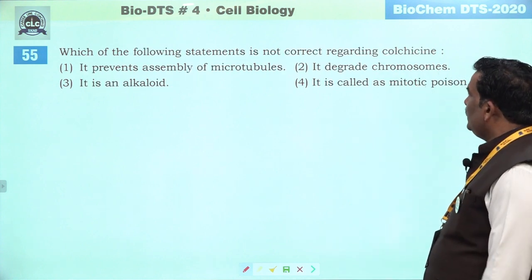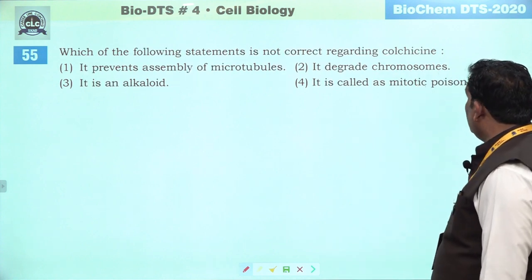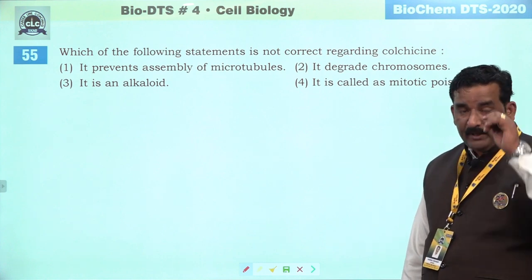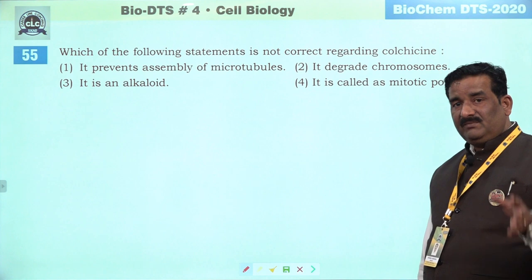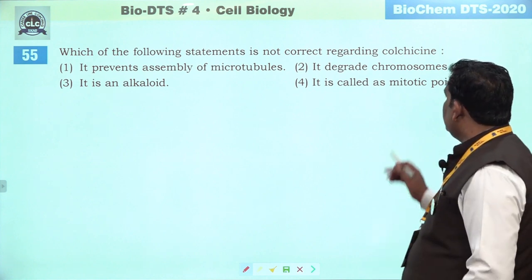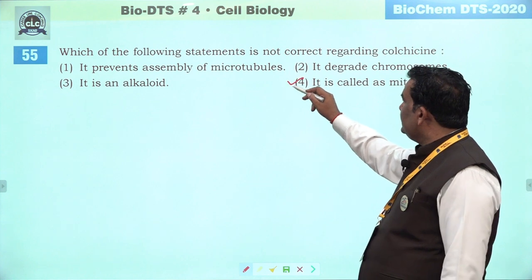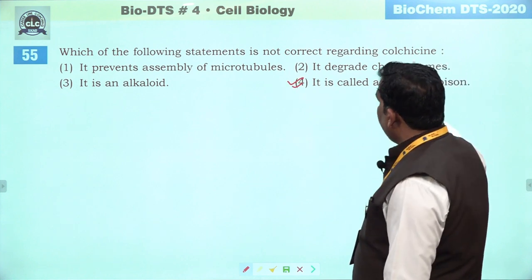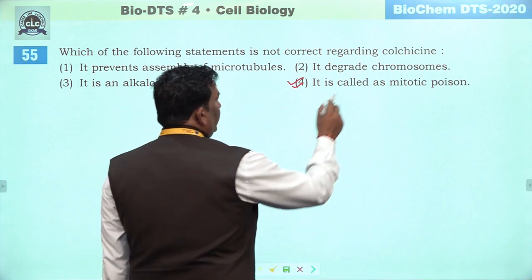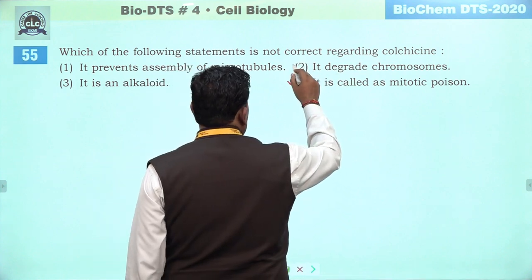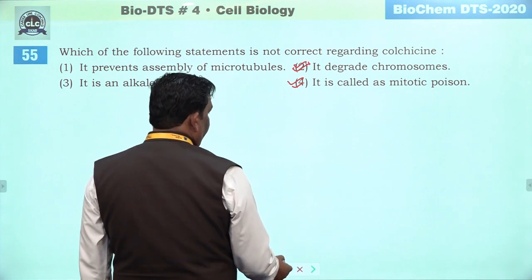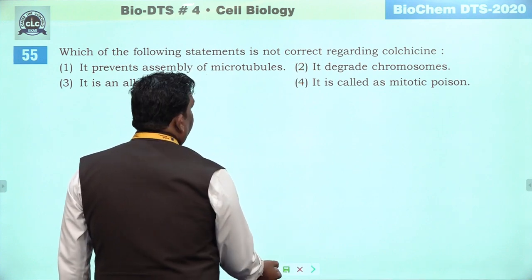Next question: which of the following statement is not correct regarding colchicine. Colchicum autumnale ek plant hai Liliaceae ka, jo colchicine ko produce karta hai. Yeh metaphase mein spindle fiber formation ko rok deta hai, isliye hum ise mitotic poison kehte hain. Humein not correct puchna hai — yeh degrade kabhi bhi chromosome ko nahi kar paayega — isliye second ek behtar option hai. Second is the right answer.